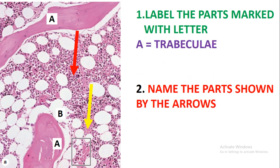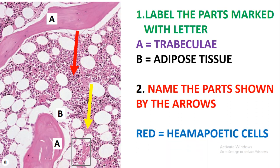Name the parts shown by the arrows. The first arrow which is red is showing the hematopoietic cells, and the last one is showing the sinusoid, because this is the red bone marrow.